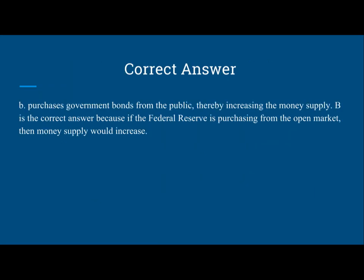Therefore, B is correct. The open market purchase is where the Fed purchases government bonds from the public, thereby increasing the money supply. B is correct because if the Federal Reserve is purchasing from the open market, then money supply would increase.